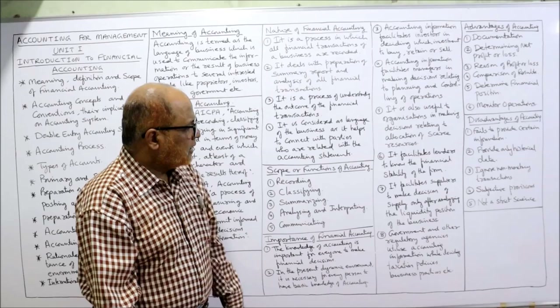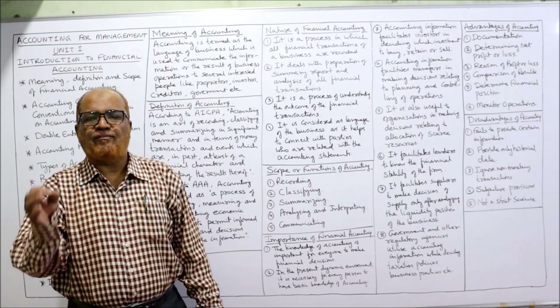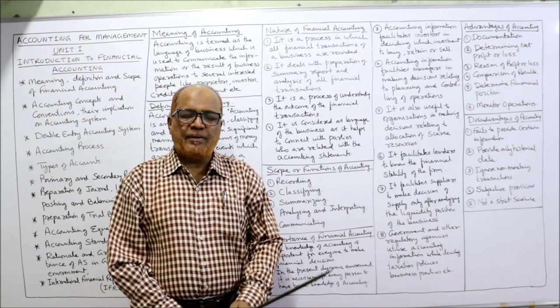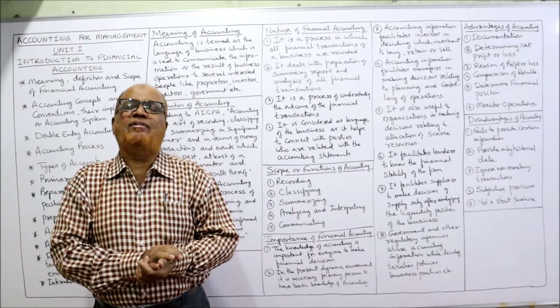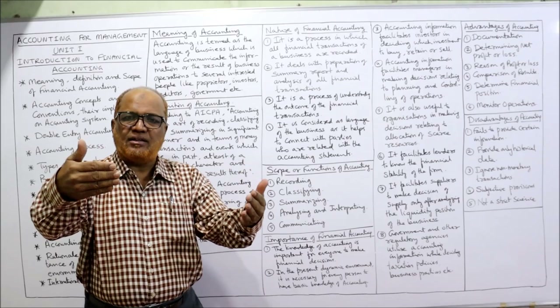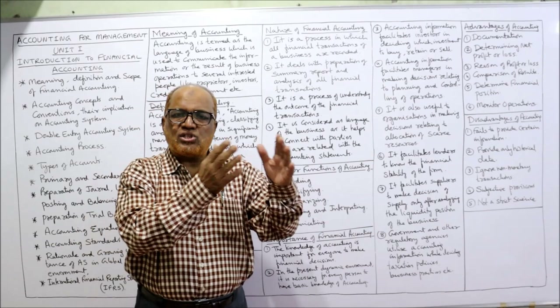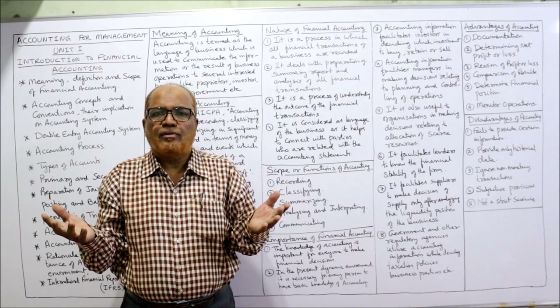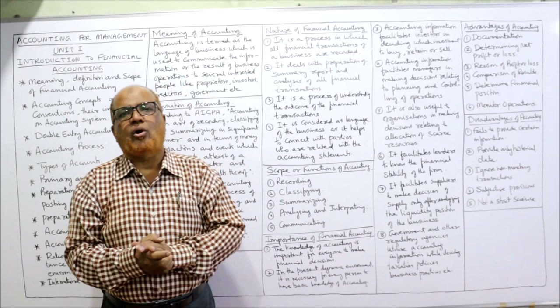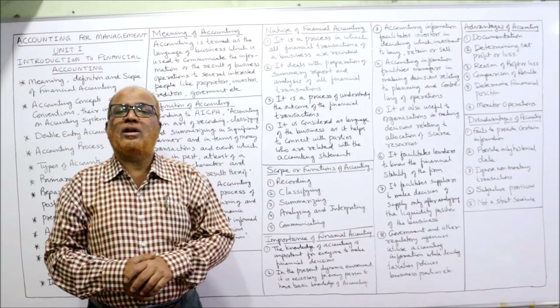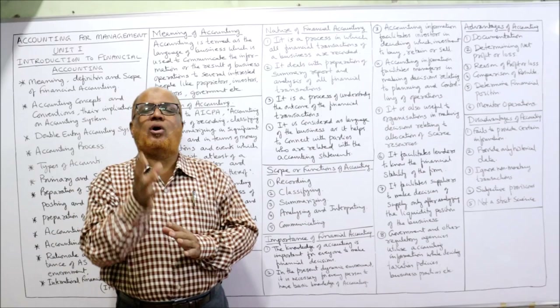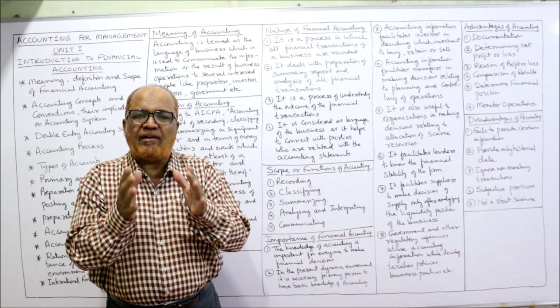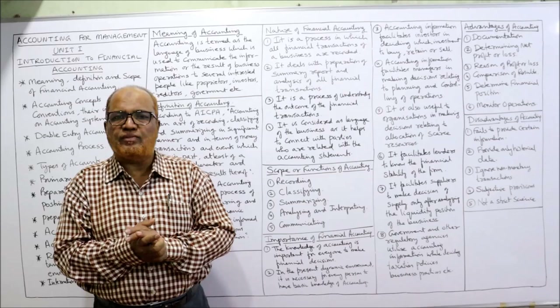Now the advantages of accounting. First is documentation — everything is documented. Transactions recorded in the books should be supported by evidence: sales invoices for sales, vouchers for payments, pay-in slips for bank deposits. Every transaction is supported by documentary proof. Second, accounting helps in determining net profit or net loss — without an accounting system we cannot ascertain profit or loss.